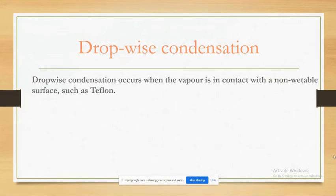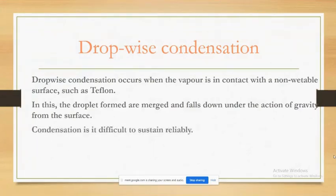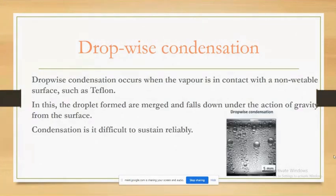The two distinct mechanisms of condensation: first is drop-wise condensation. Drop-wise condensation occurs when the vapor is in contact with a non-wettable surface such as Teflon. In this case, droplets are formed, merge, and fall down under the action of gravity from the surface. Drop-wise condensation is difficult to sustain continuously.